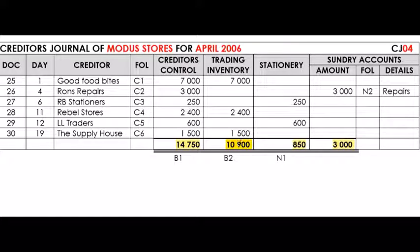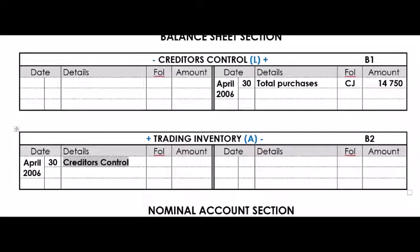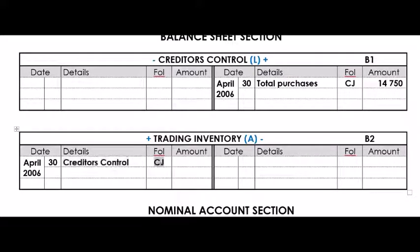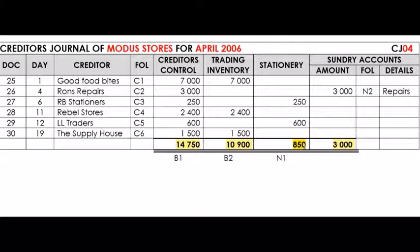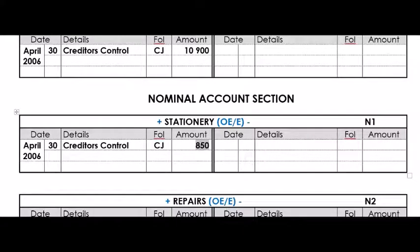Now post the Trading Inventory value to the debit side of Trading Inventory. Write April 2006, the 30th — it's a column total — and the contra account is Creditors Control, because all other accounts add up to the total on the credit side of Creditors Control. The journal is CJ and the value is 10,900 Rand. The stationery column also goes to the debit side of Stationery — also write Creditors Control — April 2006, the 30th, CJ, 850 Rand.